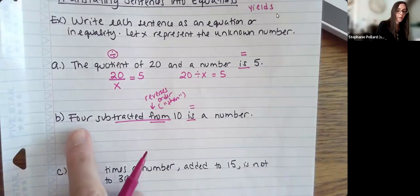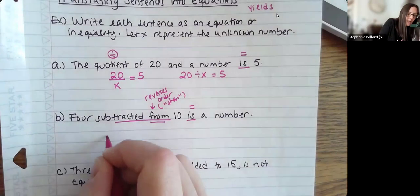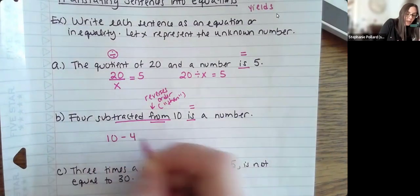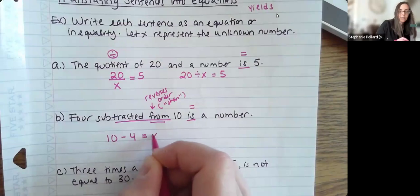So we're not going to write 4 minus 10. We're actually going to write 10 minus 4 here. And then is a number.